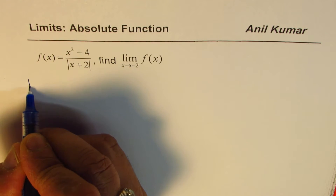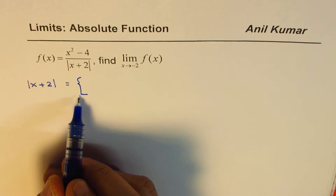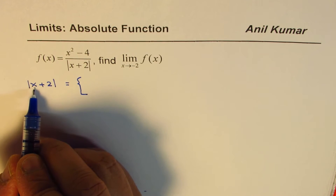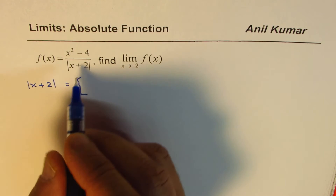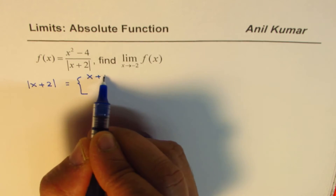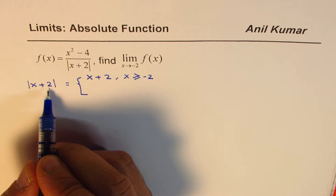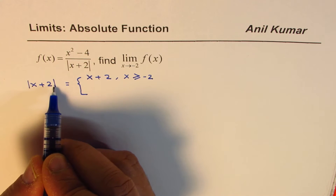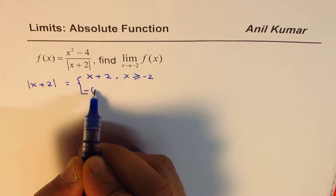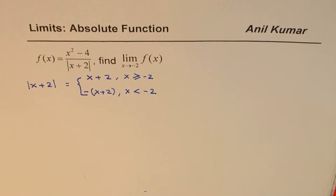Whenever you have a function with an absolute function, absolute functions can always be written as a piecewise function. For the expression x plus 2: if x is greater than or equal to minus 2, the value is non-negative, so the absolute value of x plus 2 equals x plus 2. However, if x is less than minus 2, the value would be negative, but absolute value is always positive, so we write negative of x plus 2. That is how you define the absolute function as a piecewise function.